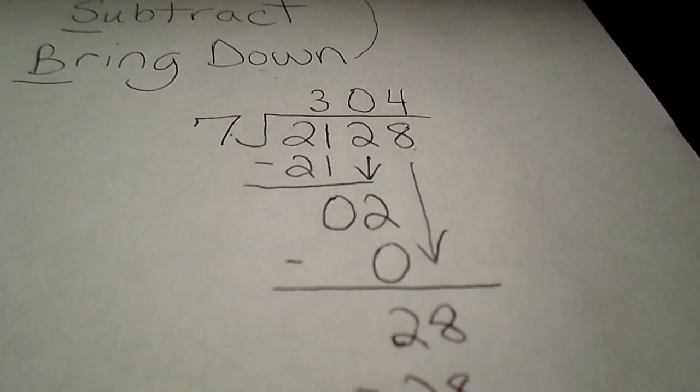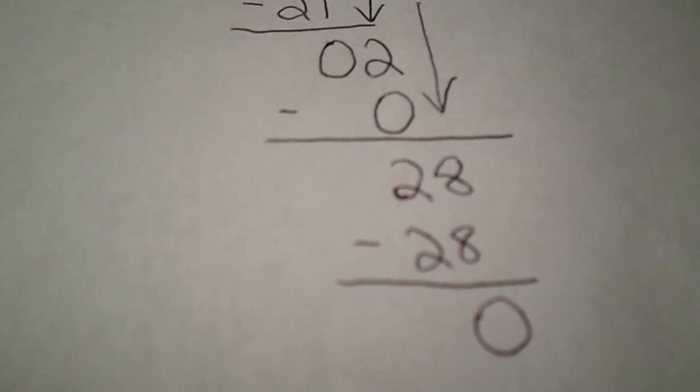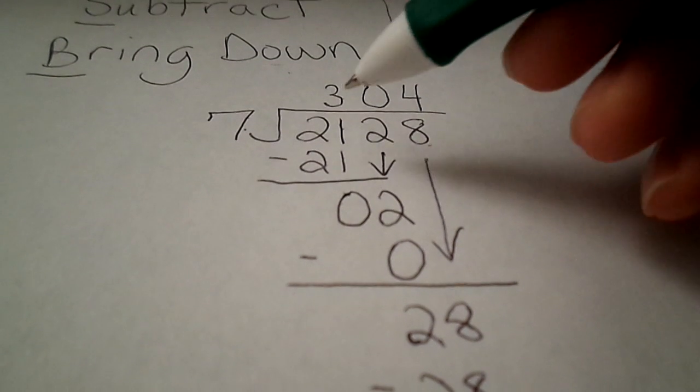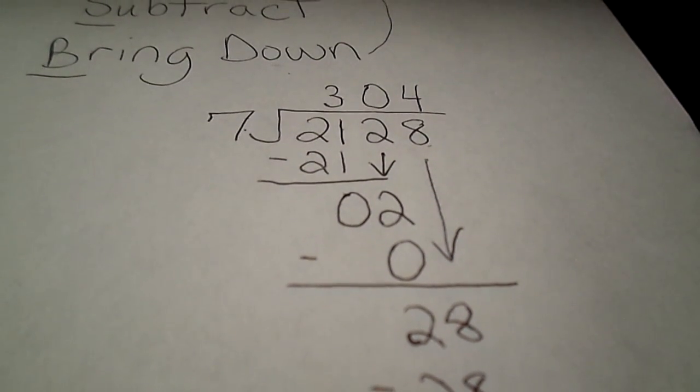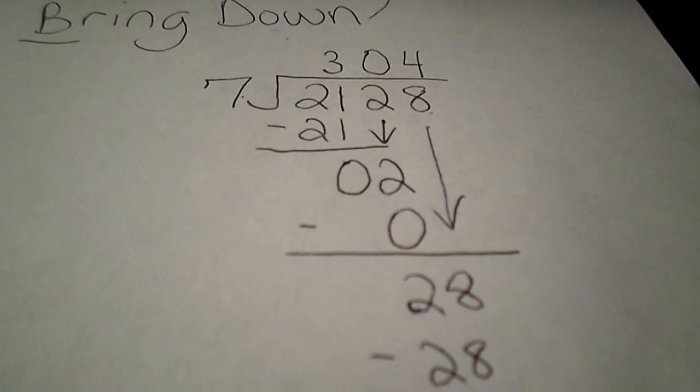And there's nothing left to bring down. Our remainder is 0. So we're done with that problem. 2128 divided by 7 is 304.